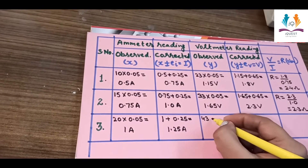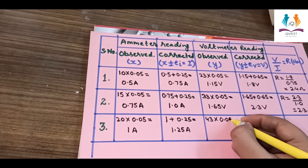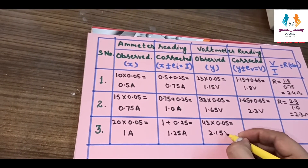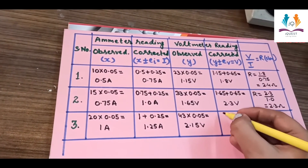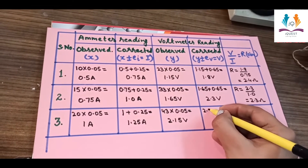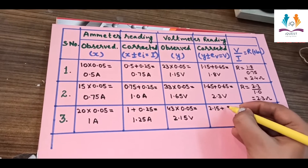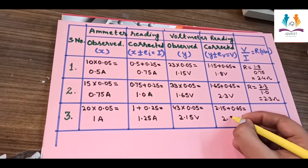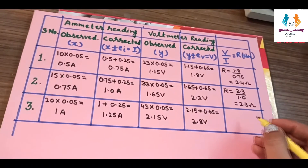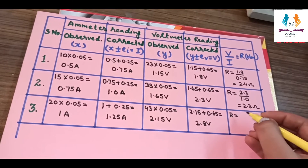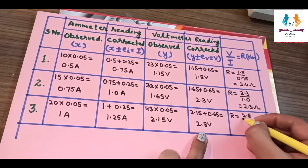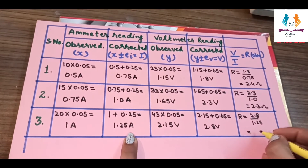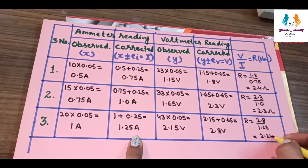The voltmeter reading is 43 divisions multiplied by 0.05, which equals 2.15 volt. Adding the error of 0.65, the corrected value is 2.8 volts. The resistance is 2.8 divided by 1.25, which equals 2.24 ohms.